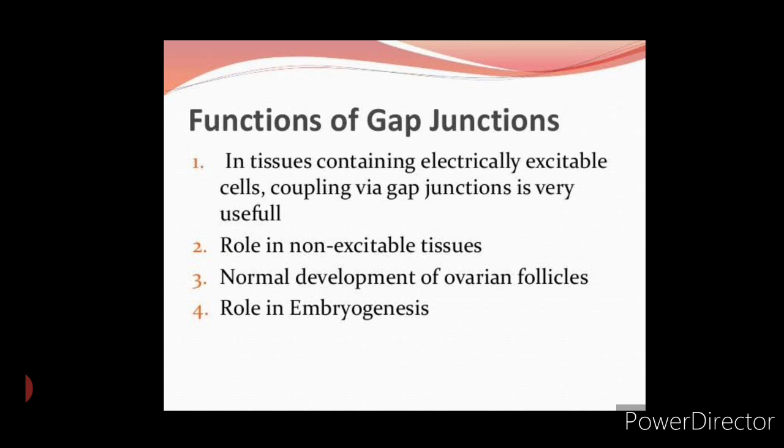This gives rise to the phenomenon of metabolic cooperation between cells. This helps in cell growth and differentiation, and therefore gap junctions are particularly widespread during embryonic development.